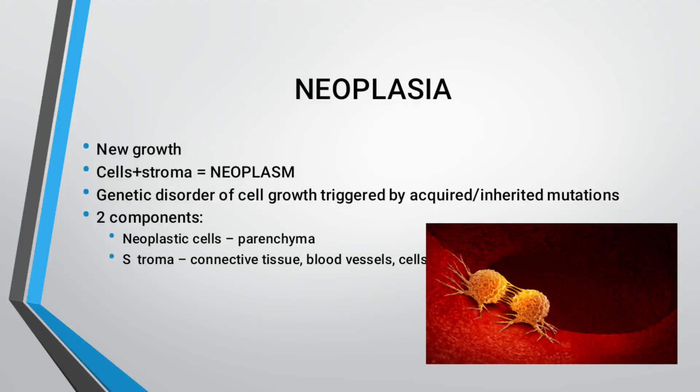Neoplasia is the new growth of cells. Cells in the stroma membrane are known as the neoplastic membrane. This is a genetic disorder of cell growth triggered by or caused by inherited mutation. Here we can see two components: one is the neoplastic cells, present in the parenchyma, and another is the stroma, which is the connective tissue or the blood vessels in the cells.